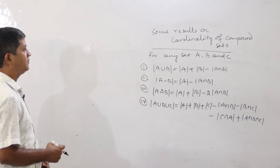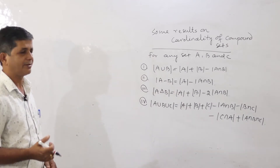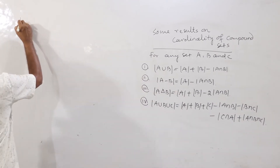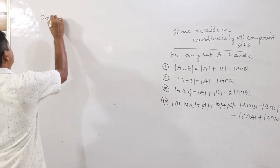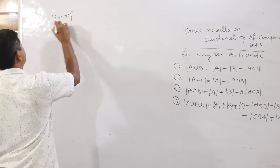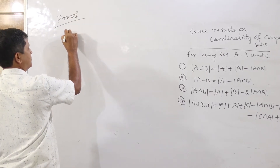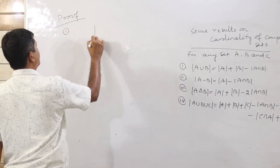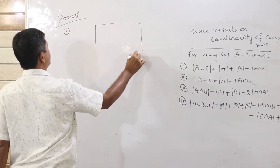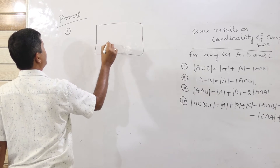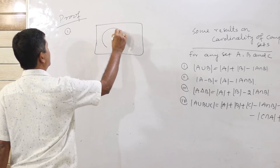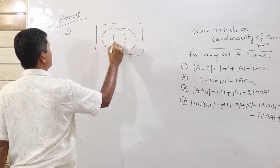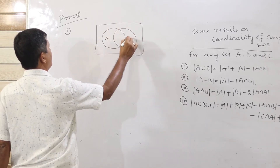Now we prove these one by one. For the first proof, consider the universal set containing set A and set B shown in the diagram.